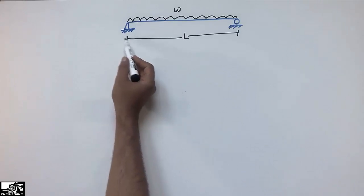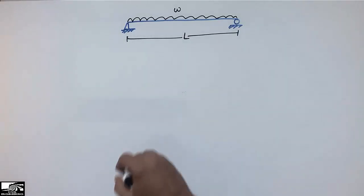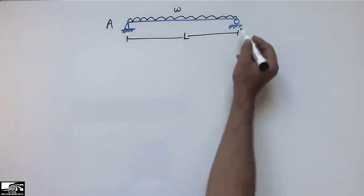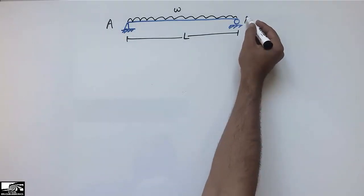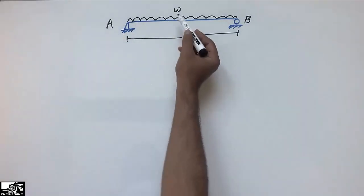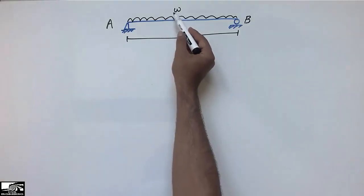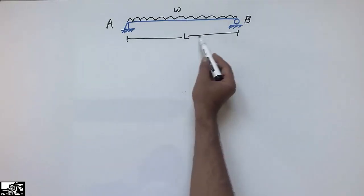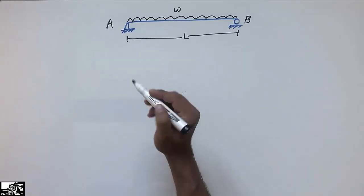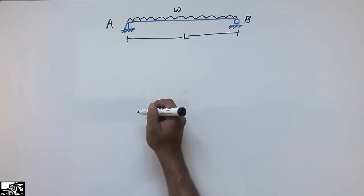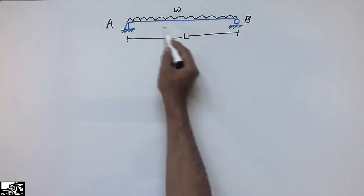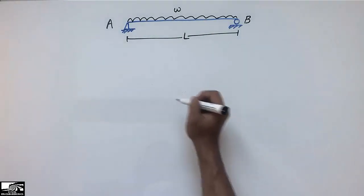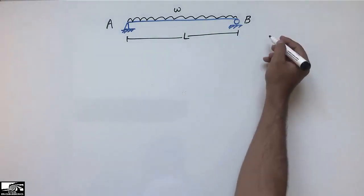To start with the shear force and bending moment diagram, I need to find the reactions at the two supports. This support is named A and this one is named B. The beam carries a uniformly distributed load of W along its full length. To find the support reactions, I need to convert this UDL into a point load.